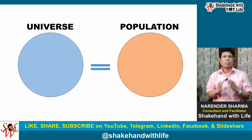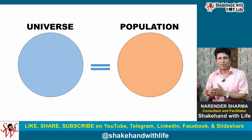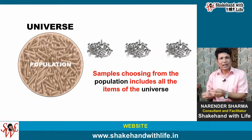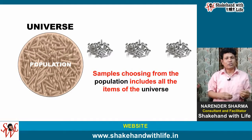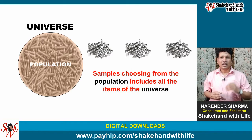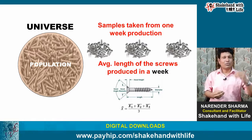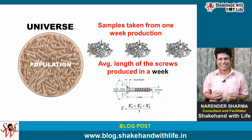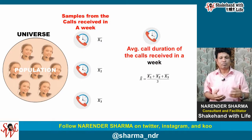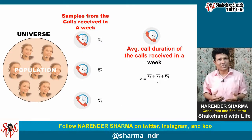But in which case is the population considered as the Universe? Universe and Population can refer to the same thing and can be considered synonyms if the population you use while choosing your samples includes all the items of the Universe. For example, if you take samples from the screws produced in a week, which we considered as Universe, then the Population and Universe are the same thing. Similarly, if you take samples from the calls received in a week that was also considered as Universe, here again the Population and Universe are the same thing.